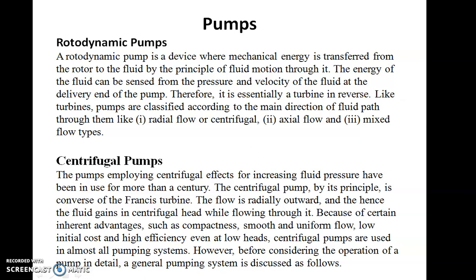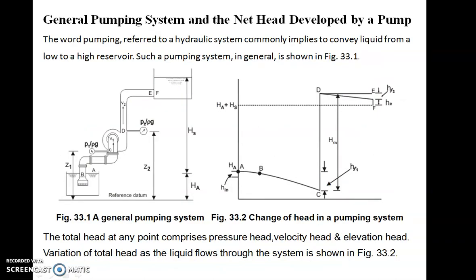Most pumps found in everyday use are radial flow or centrifugal pumps for pumping water. It is very interesting to study the construction and working of centrifugal pump as well as the analysis of velocity diagrams. Before considering the operation of pump in detail, we should know the general pumping system — how it is designed, what parameters are considered, and how outputs are obtained. The word pumping in a hydraulic system commonly implies conveying liquid from a low to a high reservoir. Our general aim is to take liquid from a lower level to a higher level.